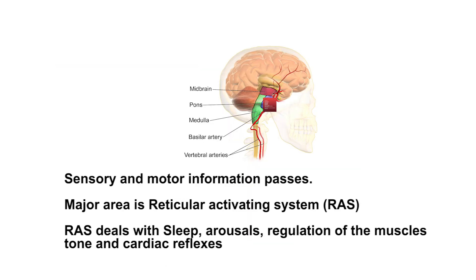Pons is a portion through which sensory and motor information passes. It contains a structure known as the reticular activating system. The reticular activating system is concerned with sleep, arousal, regulation of muscle tone, and cardiac reflexes.